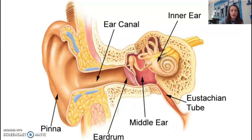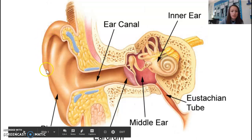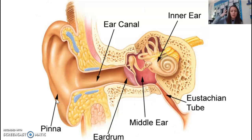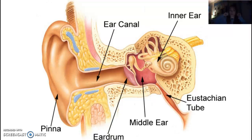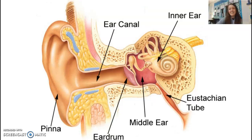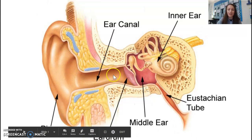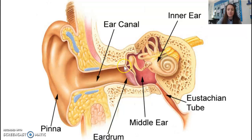The outer ear acts like a funnel where sound is channeled in. We can locate sounds by which ear the sound hits first — a sound coming from one side hits that ear slightly sooner. Sound then travels through the ear canal, or auditory canal, and hits the eardrum, which is a membrane that stretches across the auditory canal and moves as the sound strikes it.